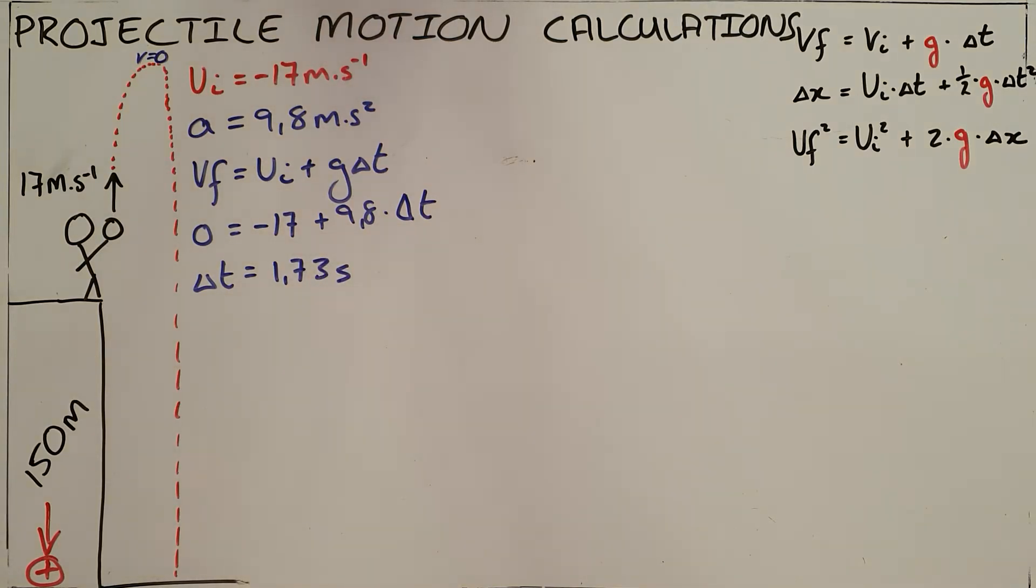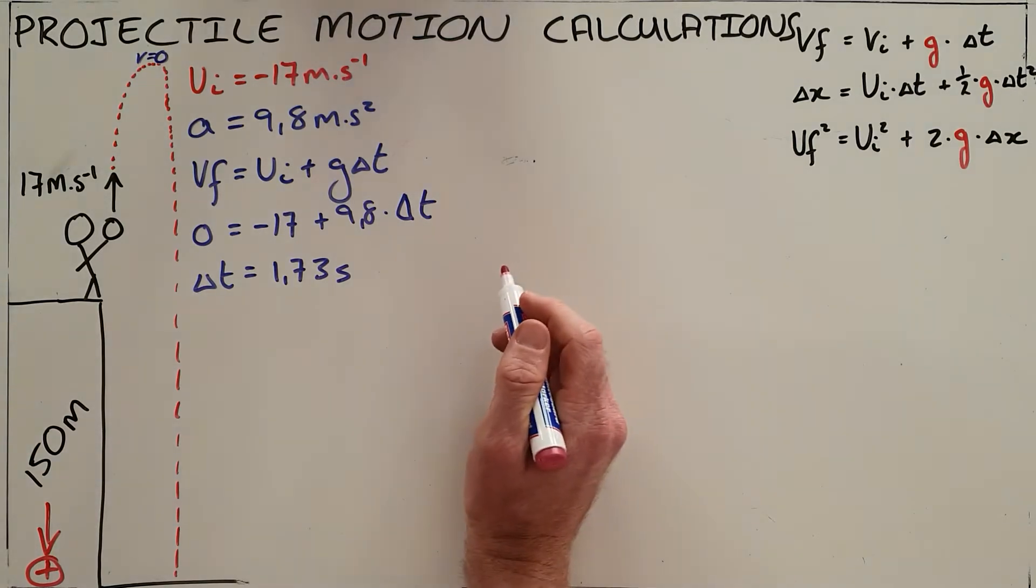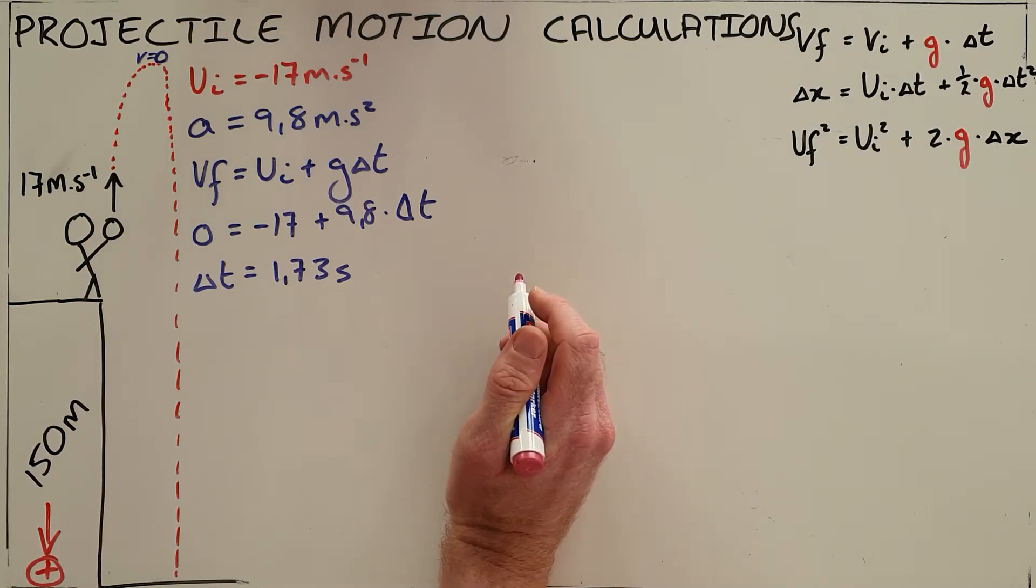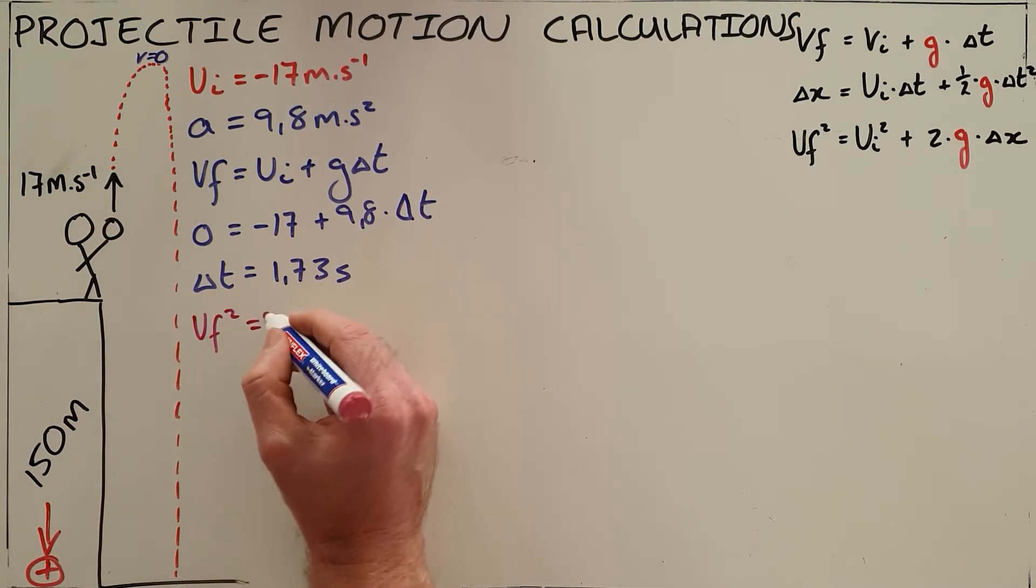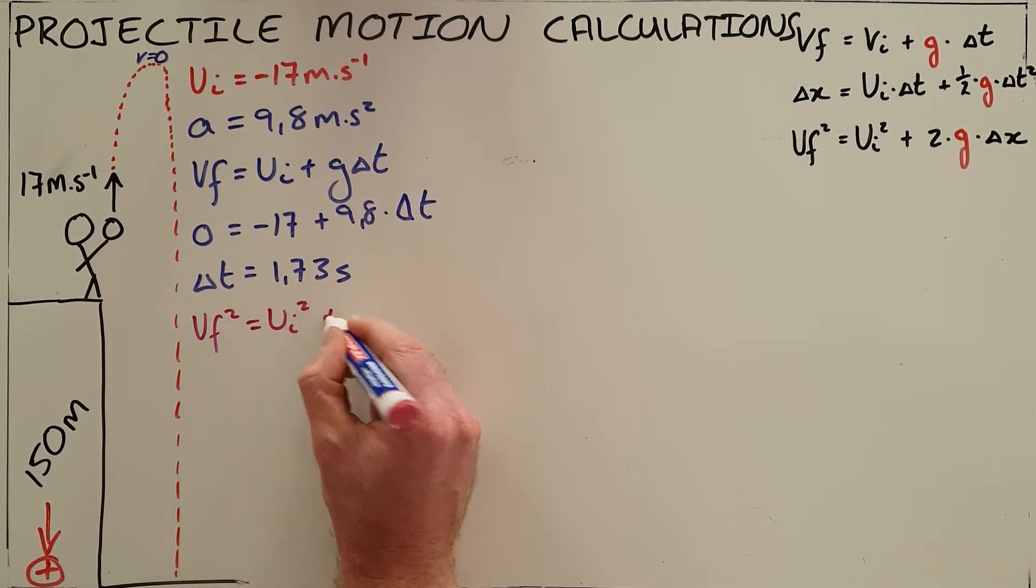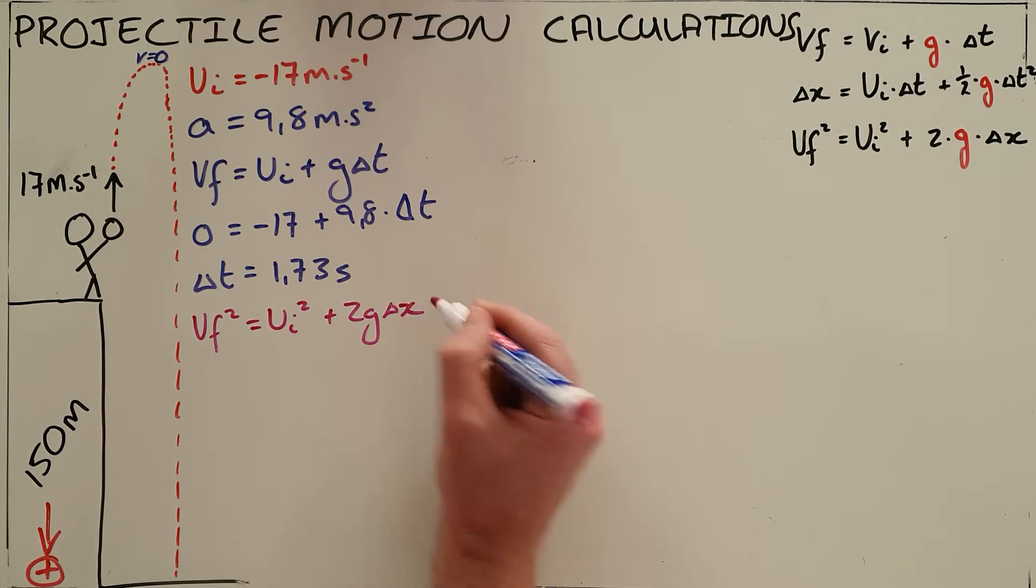Another common question here would be what is the maximum height reached above the ground. For that, we can use our third equation of motion where we now say that we know that the final velocity squared is equal to the initial velocity squared plus 2 times gravitational acceleration times the displacement.